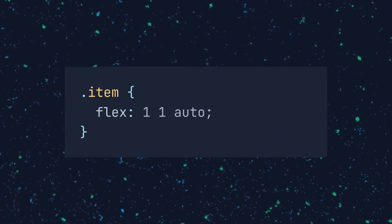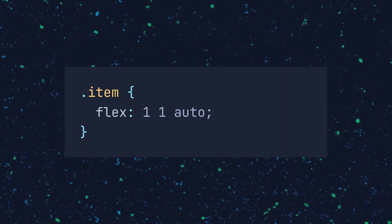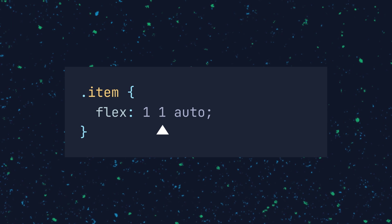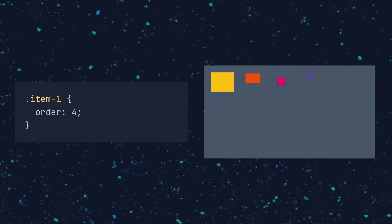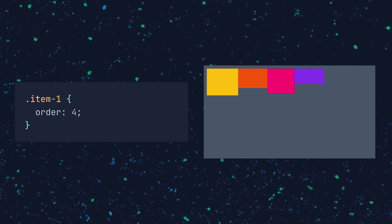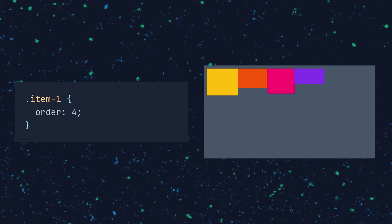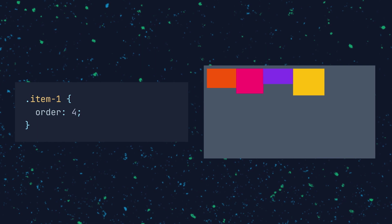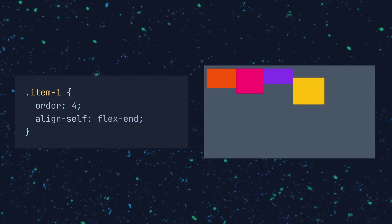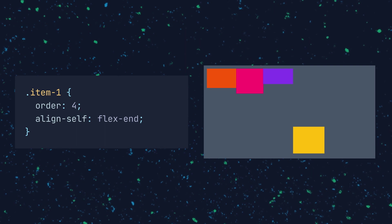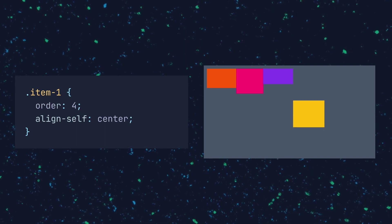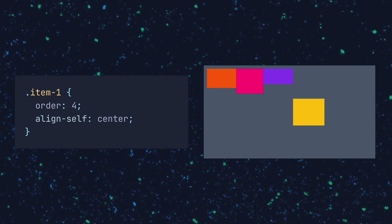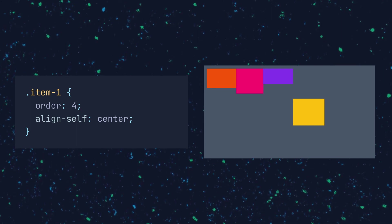You can define all three properties in one shorthand property called flex, which sets flex-grow, flex-shrink, and flex-basis. Some additional properties on flex items are important to know though used less frequently. The order property lets you change the layout order of flex items from their default HTML source order, and it even supports negative numbers. The align-self property lets a flex item break apart from the alignment set on the container's align-items property, taking the same possible values and applying them directly to the individual item.